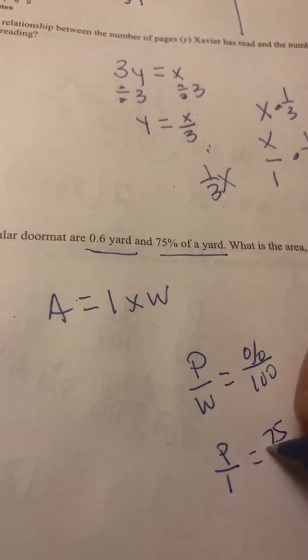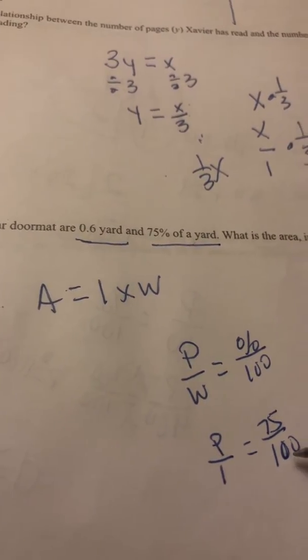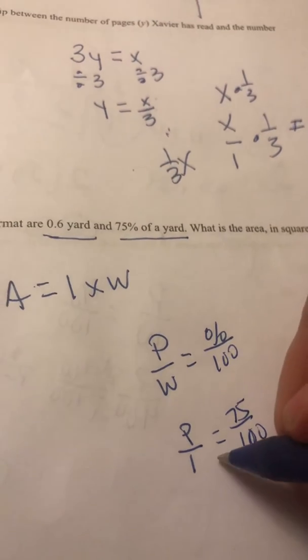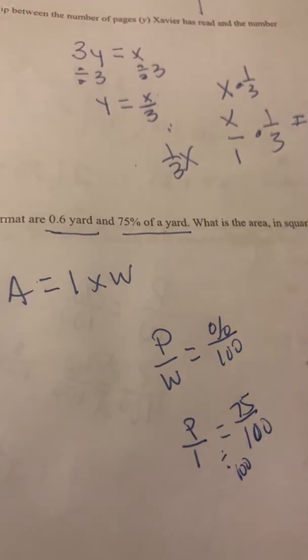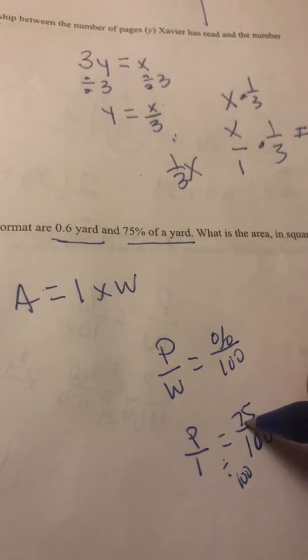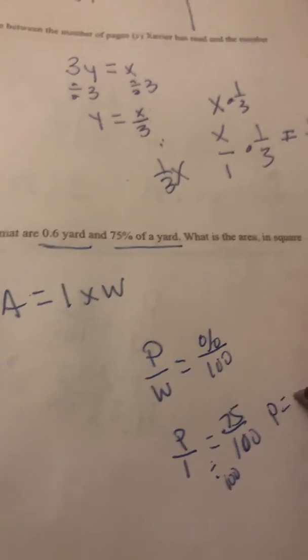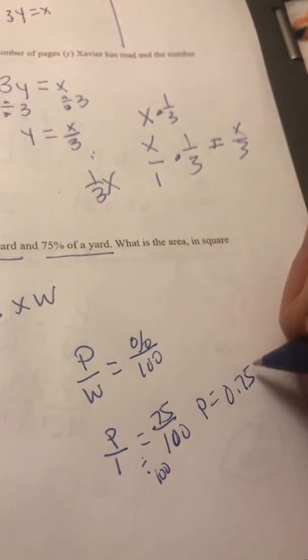Now, I'm going to put 75 over 100. I know I could easily go from 100 to 1 by dividing by 100. If I divide 75 by 100, all I need to do is move my decimal point two places to the left. So I know my part is going to be 0.75.